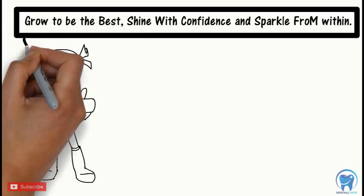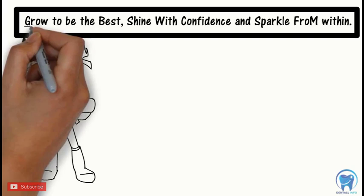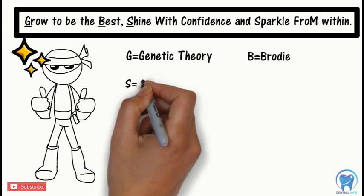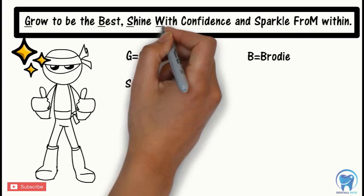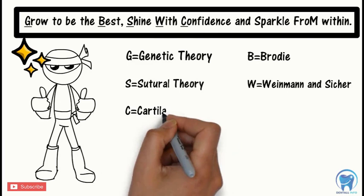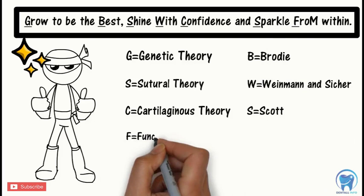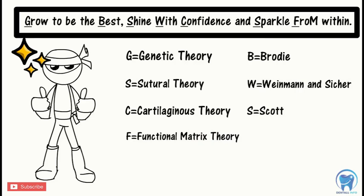The letter G from the word Grow means Genetic Theory. The letter B from the word Best means Brody. The letter S from the word Shine means Suture Theory. The letter W from the word With means Windman and Seager. The letter C from the word Confidence means Cartilaginous Theory. The letter S from the word Sparkle means Scott. The letter F from the word From means Functional Matrix Theory. And the letter M from the word Within means Melvin Moss.